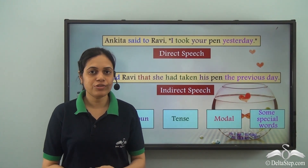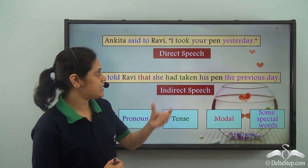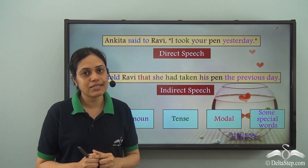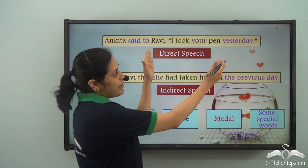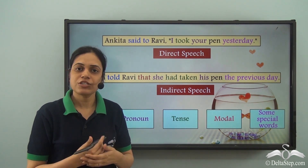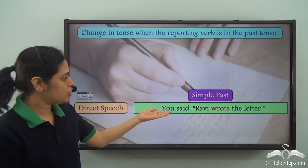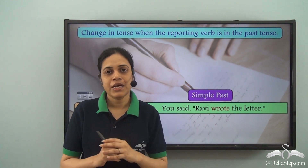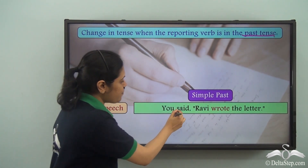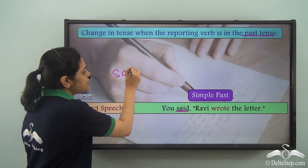In this lecture we will see how the tense changes when we convert a sentence from direct speech to indirect speech. More specifically we will restrict ourselves to past tense — that is when the sentence within the inverted commas is in past tense. So look at this sentence: You said Ravi wrote the letter.